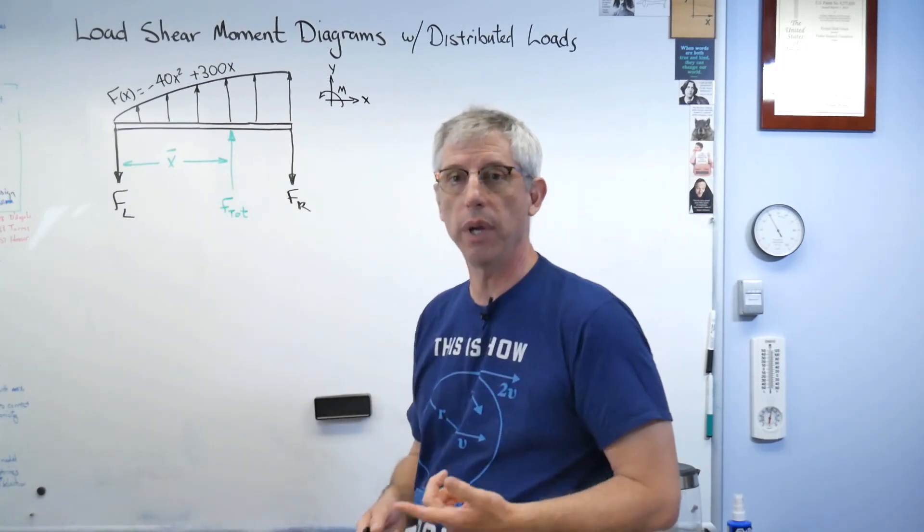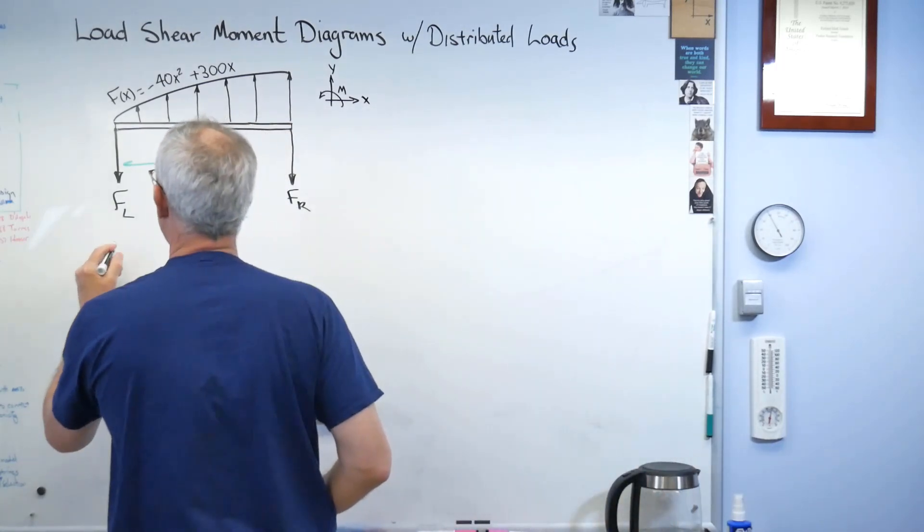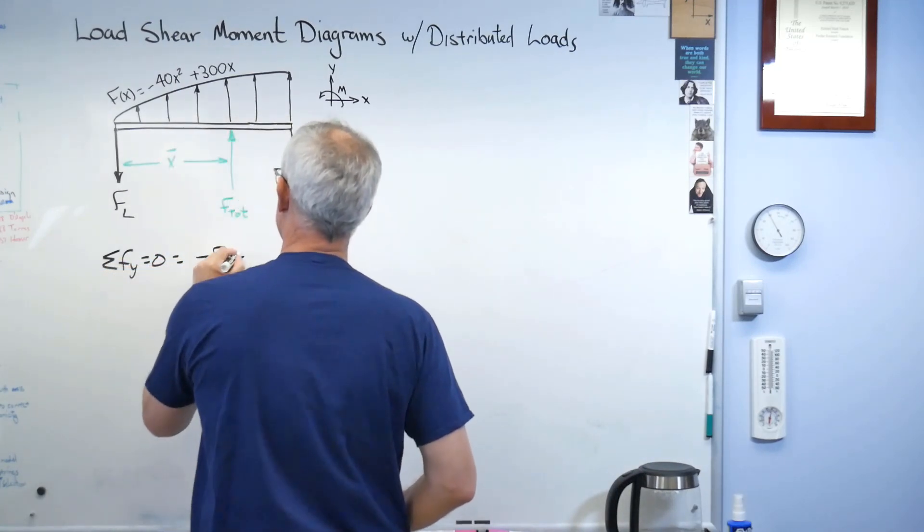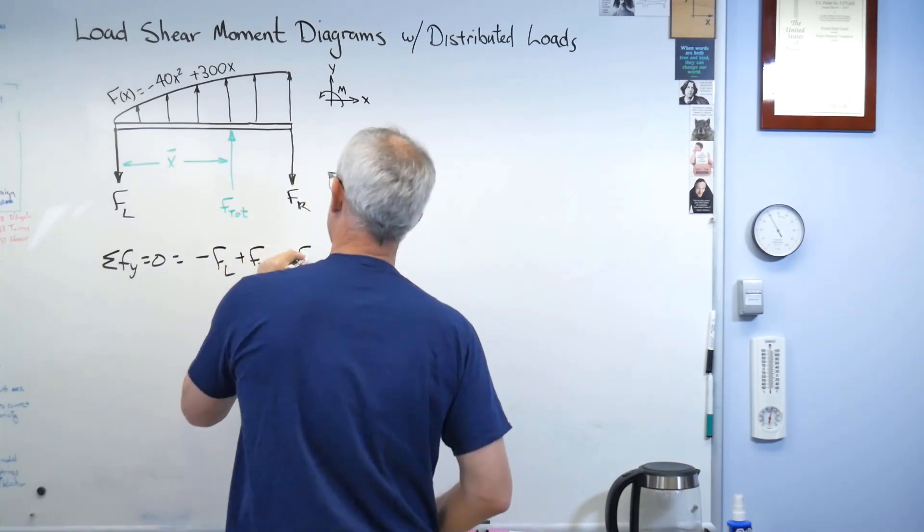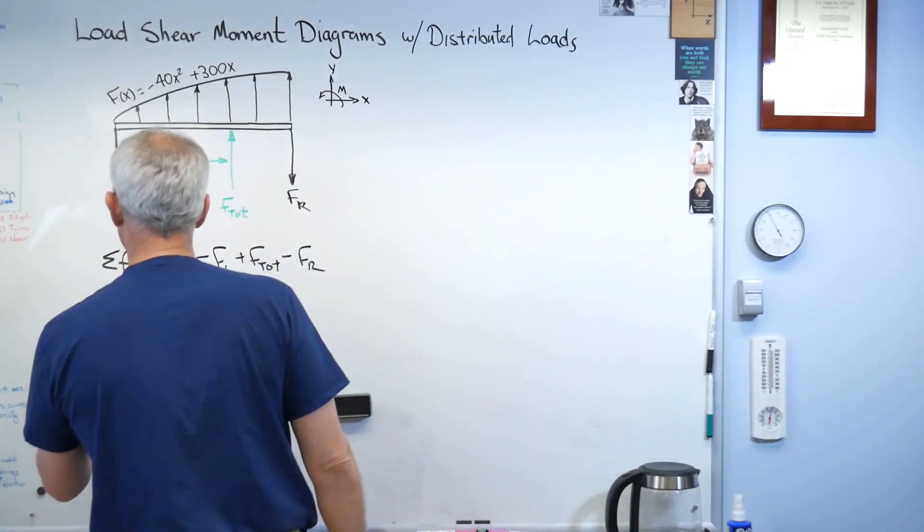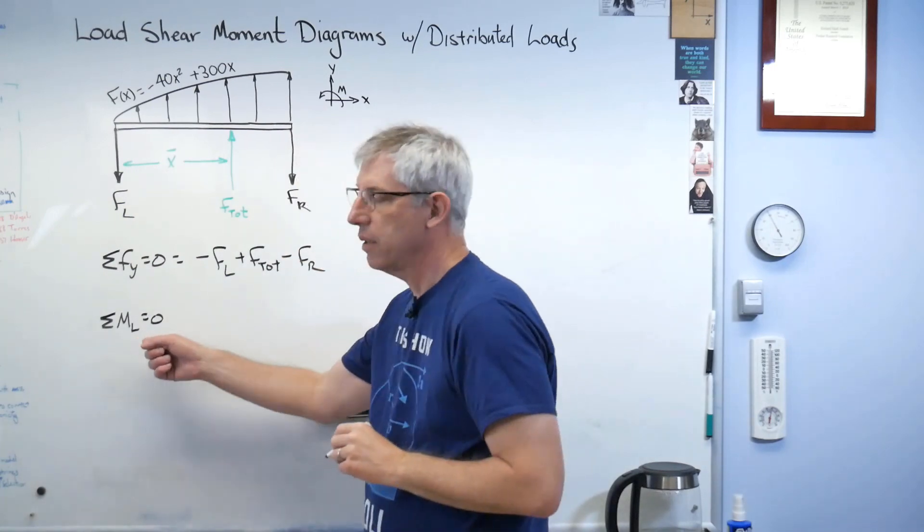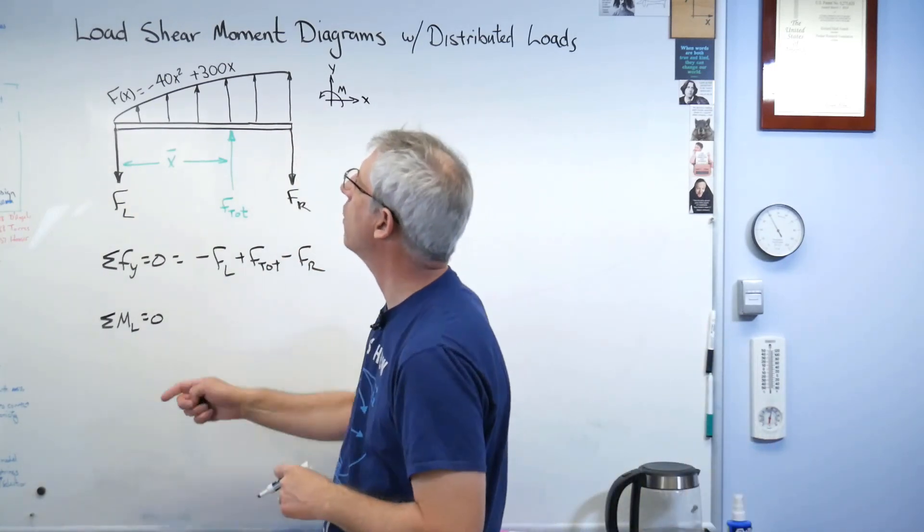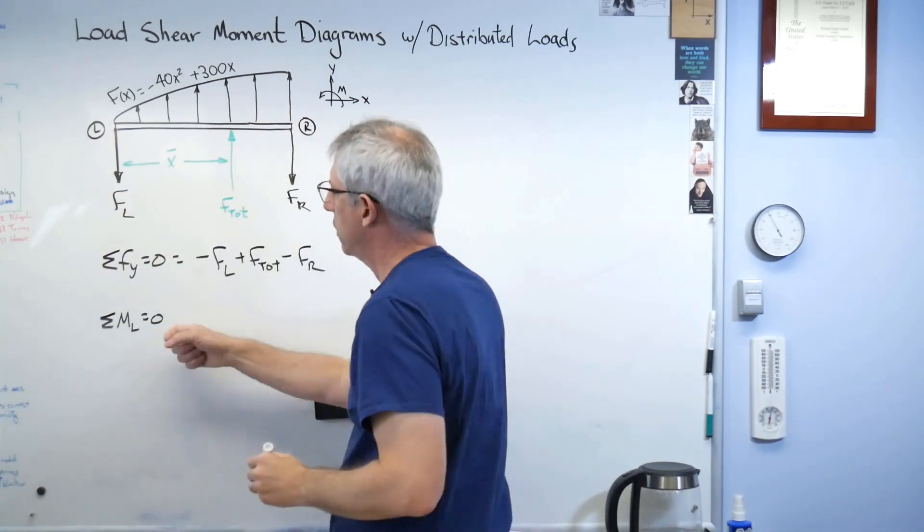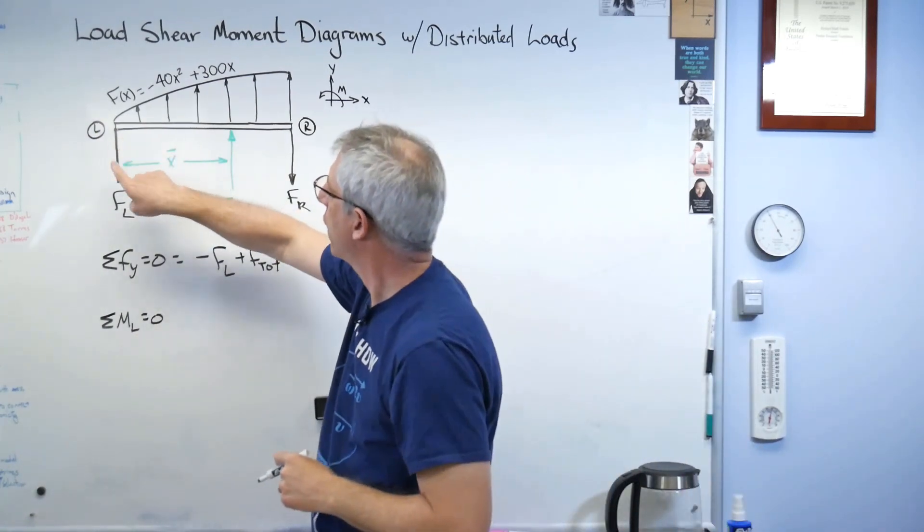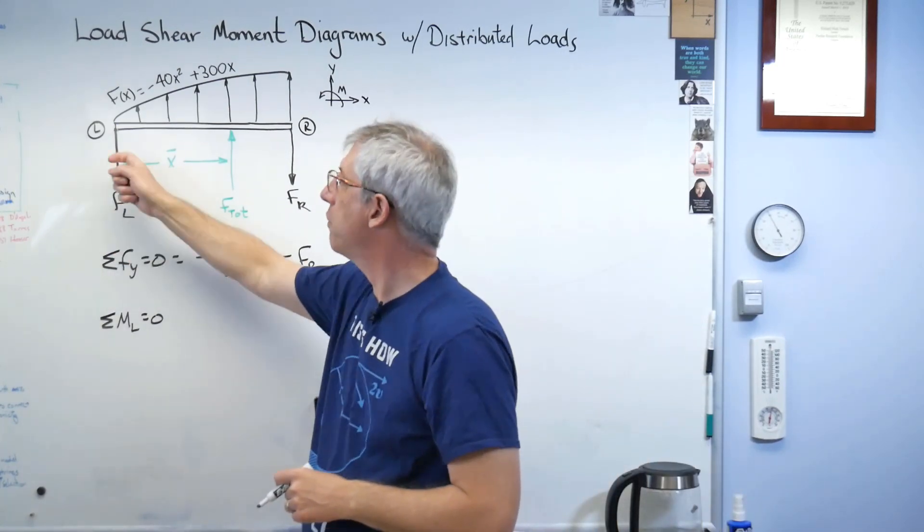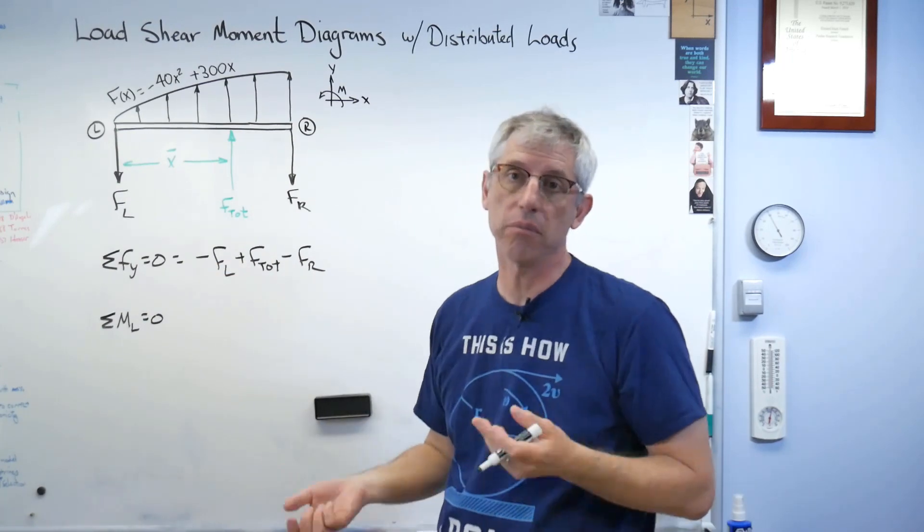Remember the pins at the end don't know the difference between a distributed load and a properly concentrated load. They experience the same forces either way. The beam does know the difference, so when we're drawing the load shear moment diagram, we have to go back to the original distributed load. We're not going to use the concentrated load for that. That gives you the wrong answer. All right, so there we are. Step three, equations of static equilibrium. Let's start by summing the forces in the vertical direction. That's pretty easy.